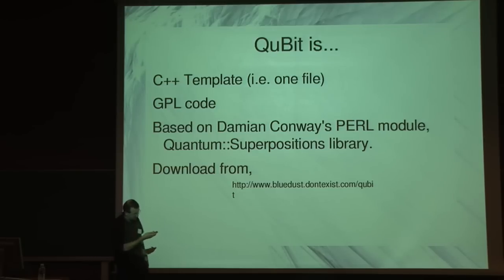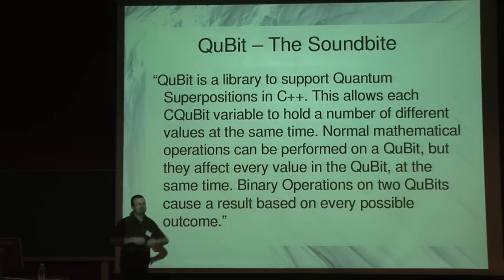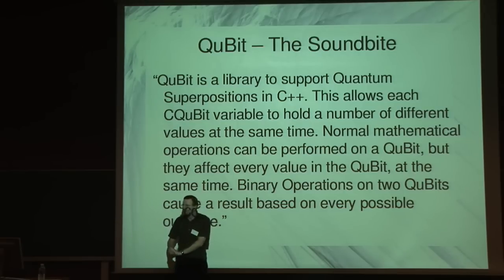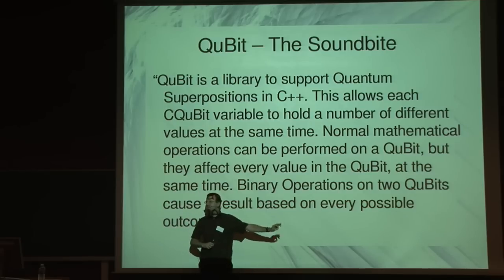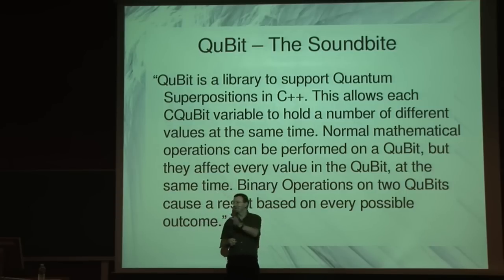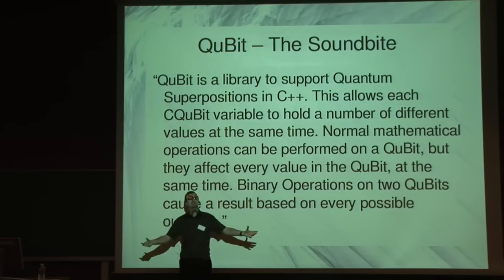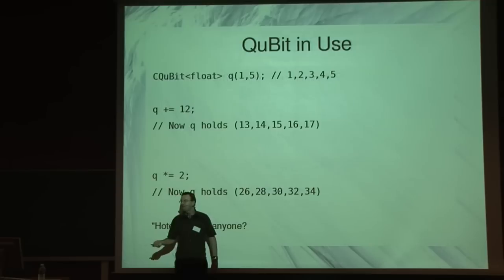So, the soundbite — the bit I shall read and pretend is very intelligent. Qubit is a library to support quantum superpositions in C++. This allows each qubit variable to hold a number of different values at the same time. Memory's fine, eyesight's going. Normal mathematical operations can be performed on a qubit, but they affect every value in the qubit at the same time. Binary operations on two qubits cause a result based on every possible outcome.